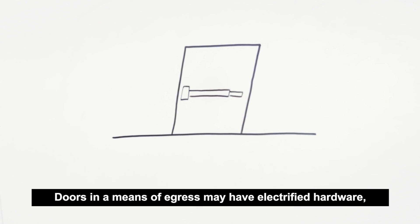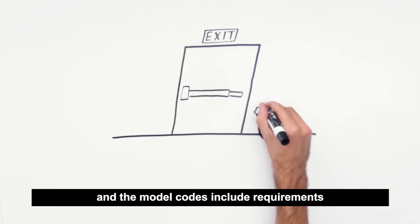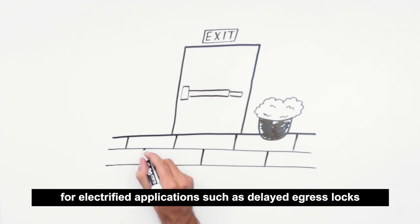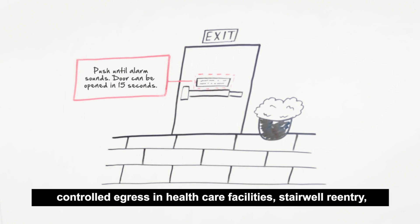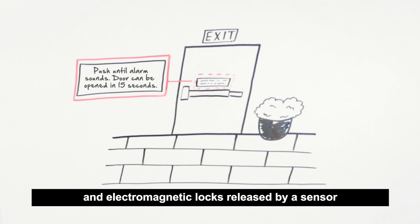Doors in a means of egress may have electrified hardware, and the model codes include requirements for electrified applications such as delayed egress locks, controlled egress in healthcare facilities, stairwell re-entry, and electromagnetic locks released by a sensor or by door-mounted hardware. Refer to our videos on those applications to learn more about these code requirements.